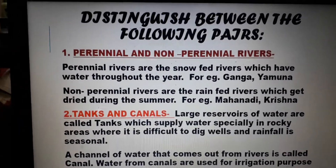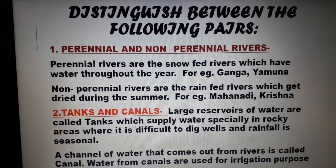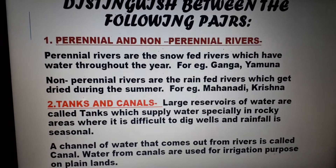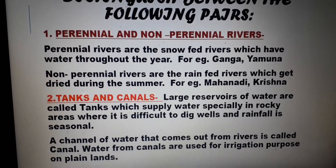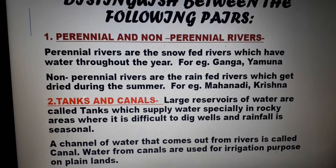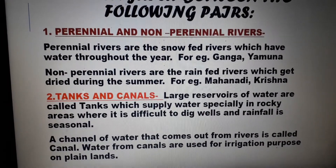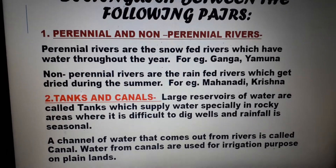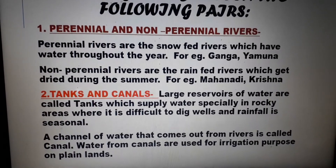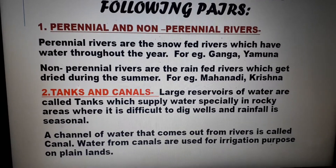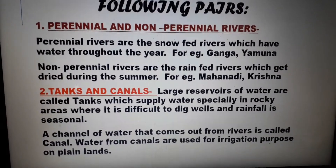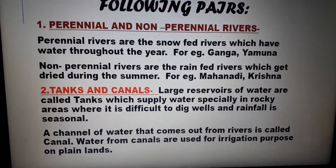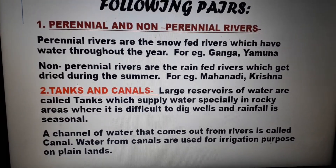Exercise D: Distinguish between the following pairs. The first one — perennial and non-perennial rivers. Perennial rivers are the snow-fed rivers which have water throughout the year, for example Ganga and Yamuna. Non-perennial rivers are the rain-fed rivers which get dried during the summer, for example Mahanadi and Krishna.